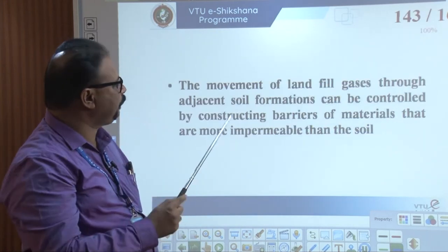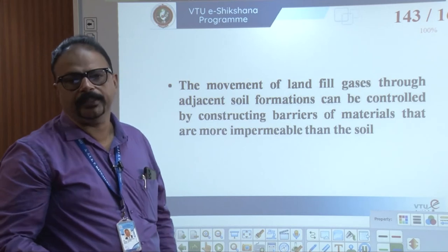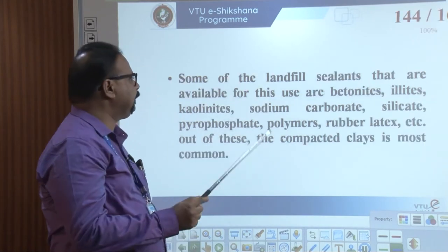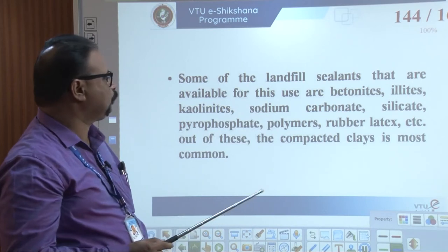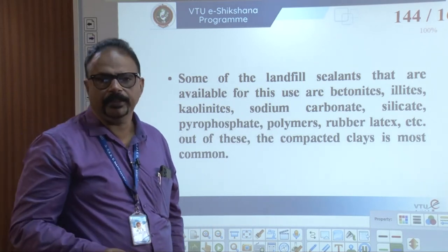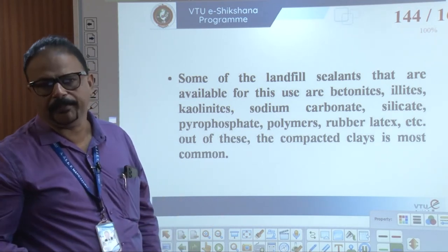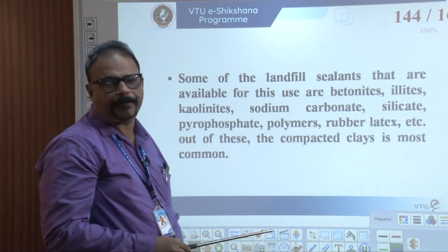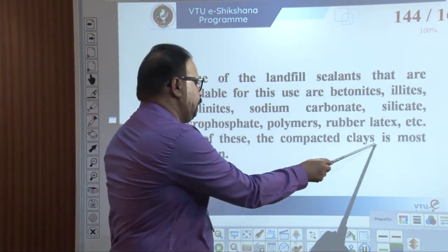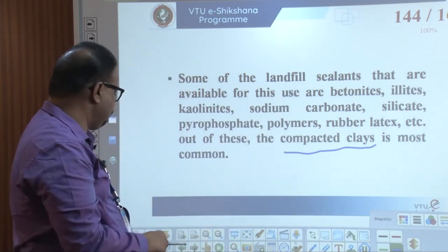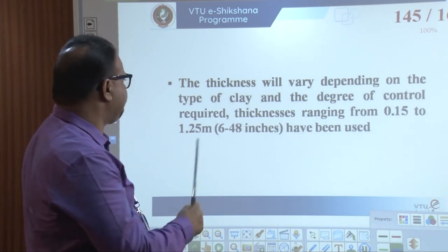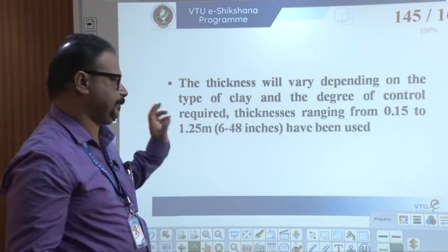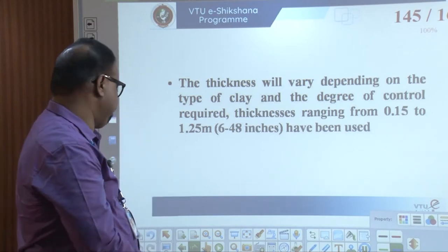The movement of landfill gas to adjacent soil is controlled by constructing barrier material more impermeable than the soil. Different materials can be used as sealants — bentonite, illites, carbonates, sodium carbonate, silicates, phosphates, pyrophosphates, polymer, rubber, latex, etc. Compacted clay is the most commonly used. Clay liner and geomembrane layer — two types of layers, primary and secondary. The thickness depends upon the degree of control required; gas barrier thickness ranges from 0.5 to 1.25 mm for the clay layers.